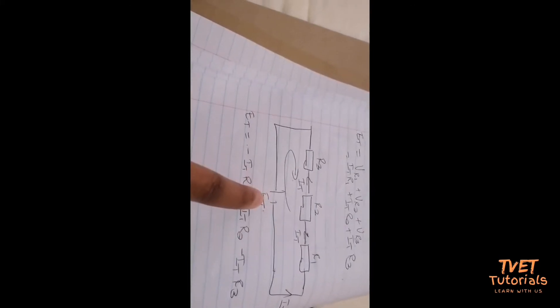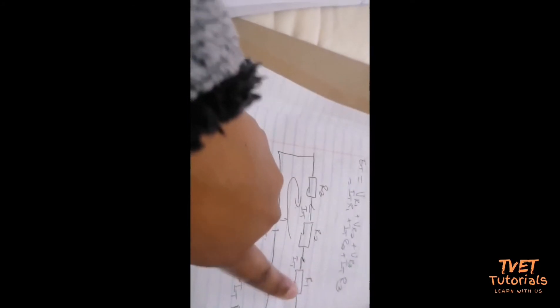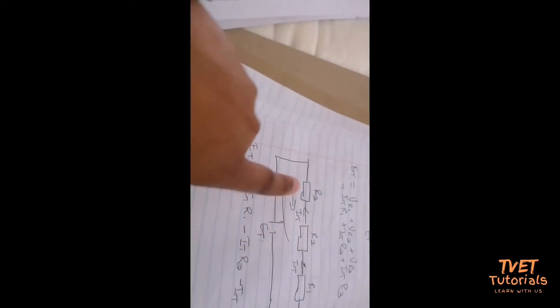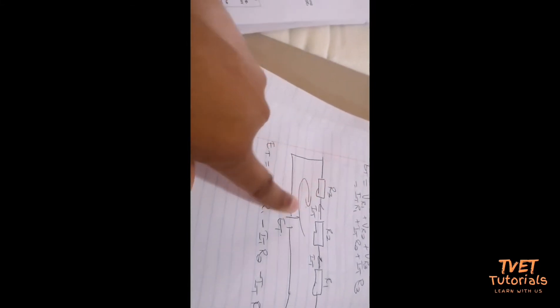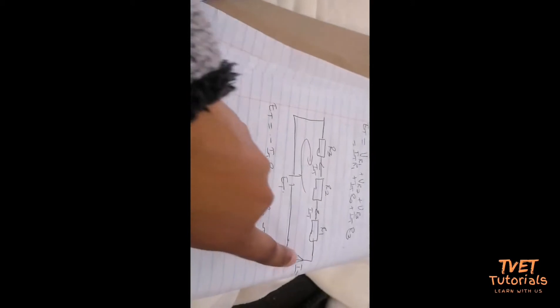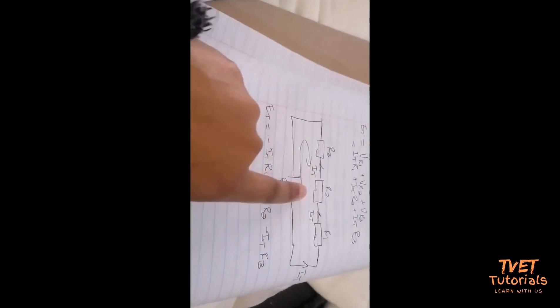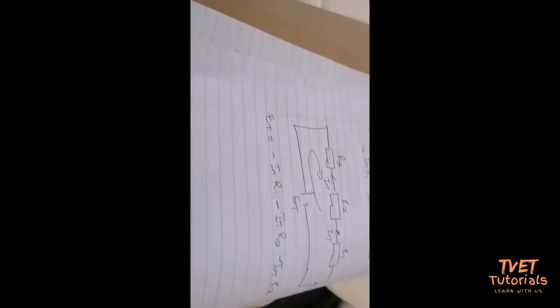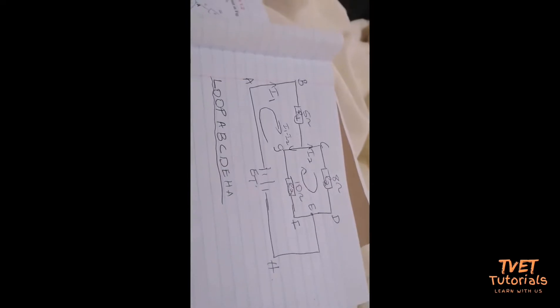Kirchhoff's second law says the total EMF equals the voltage across R1 plus voltage across R2 plus voltage across R3. The voltage across each resistor is the current times the resistance. Because the current is opposing your direction, it will be negative.